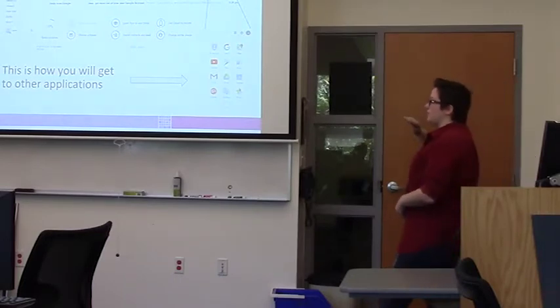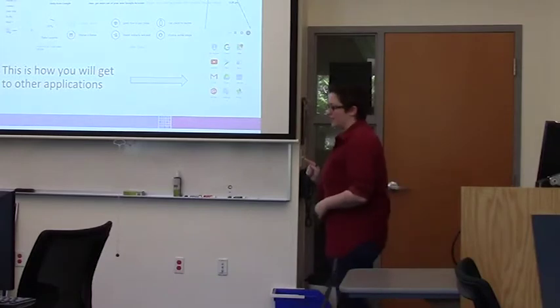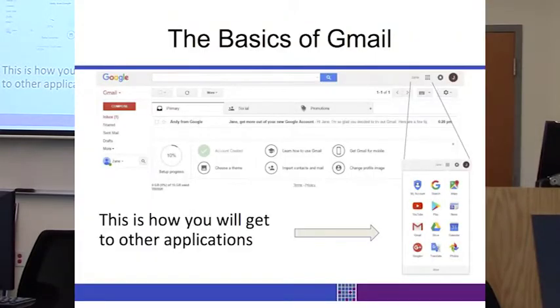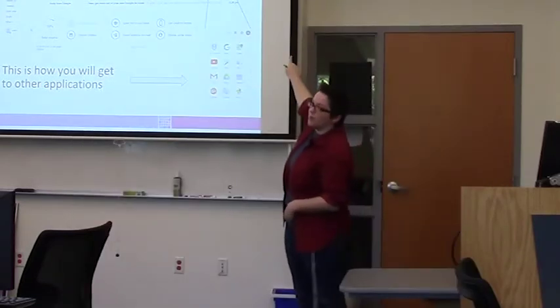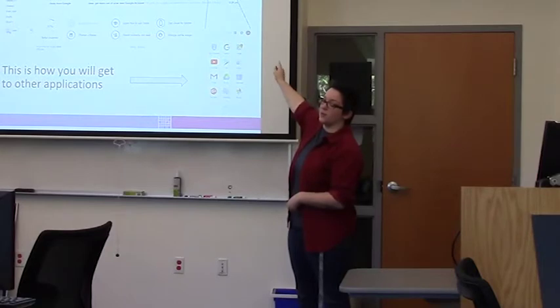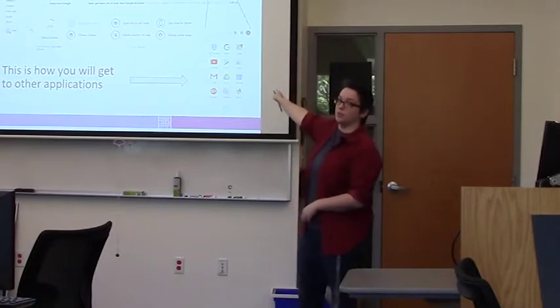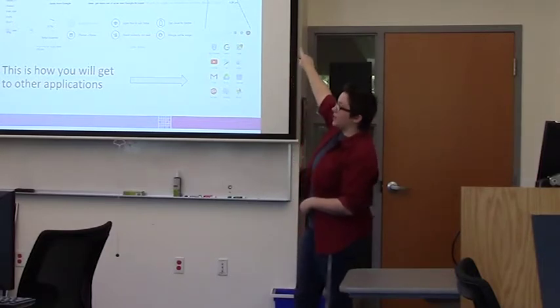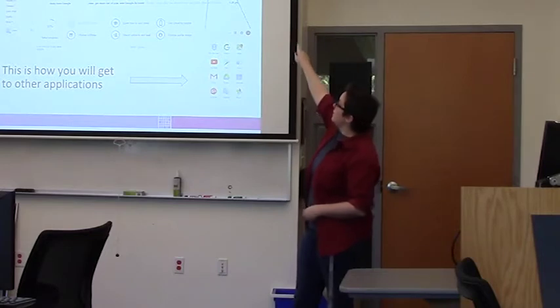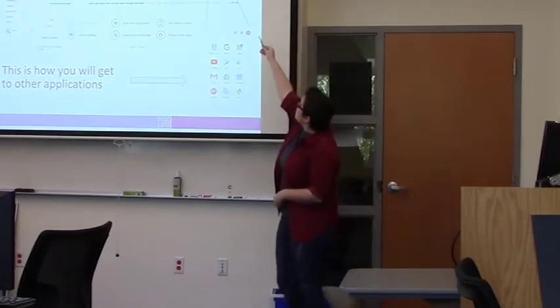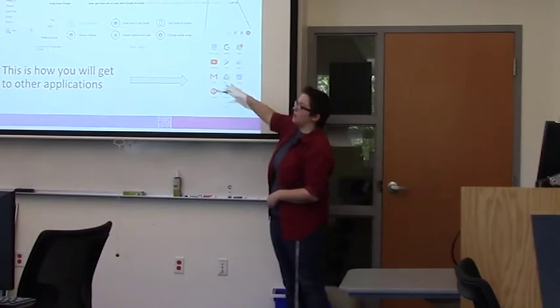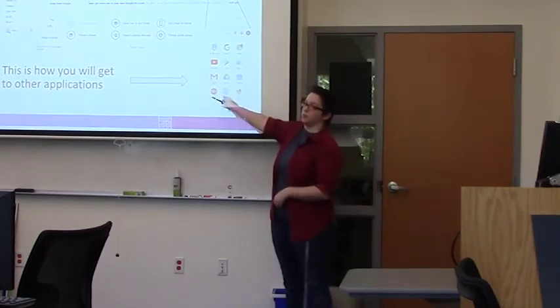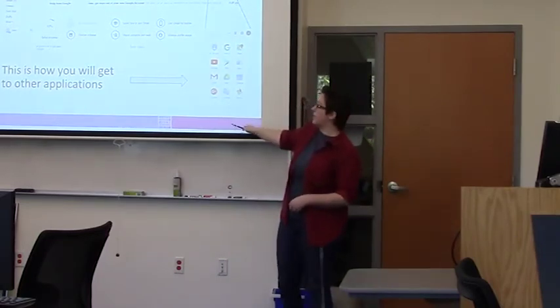So when you first enter your inbox, this is what shows up. At the very top is the bar that's universal among all Google products that will appear above pretty much anything you use. The top right hand corner is your Google account. And then up here where there's a 3x3 box, that's how you access all the Google products. And this is universal among everything.